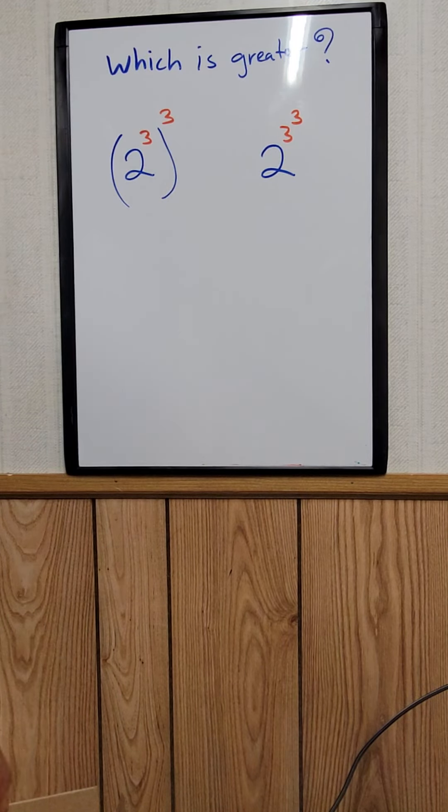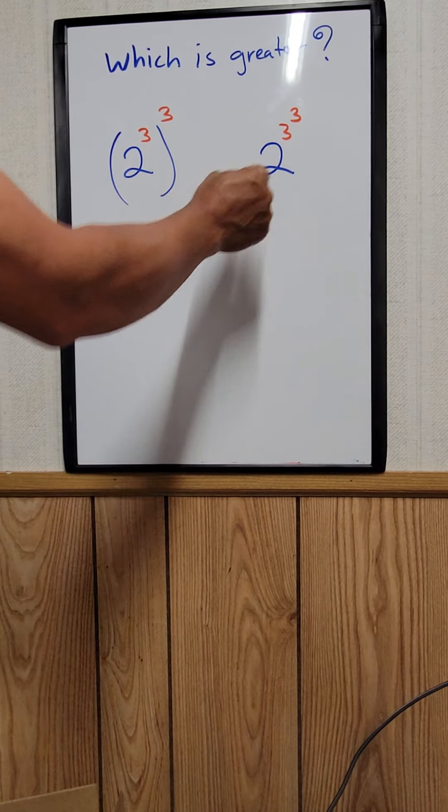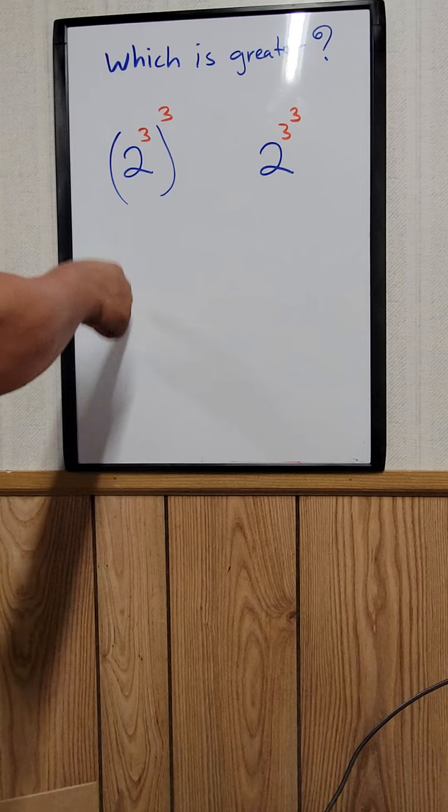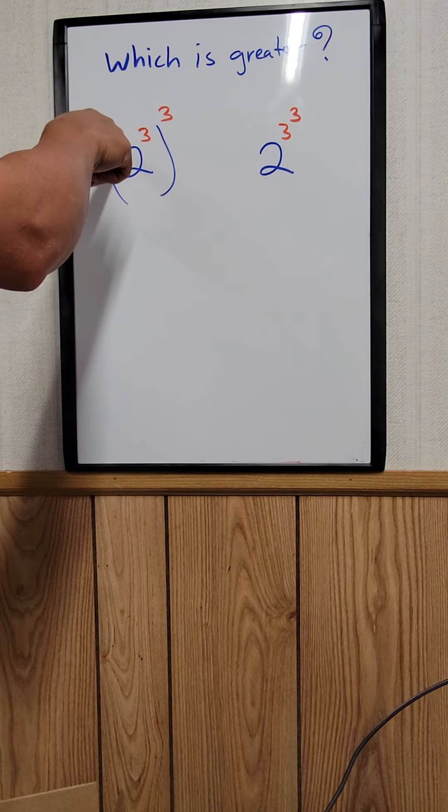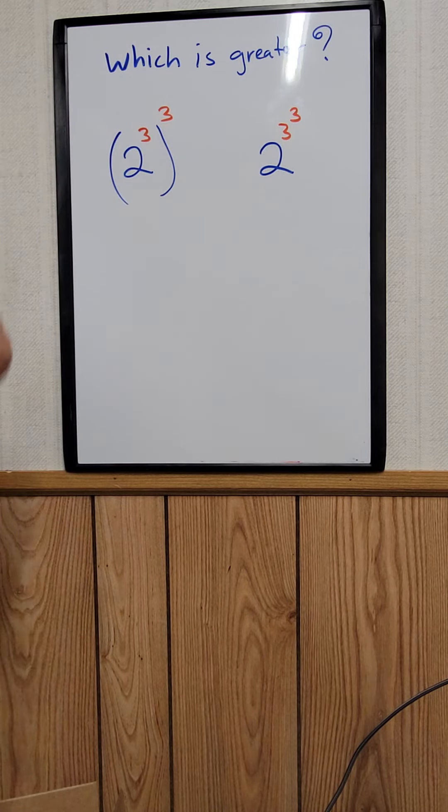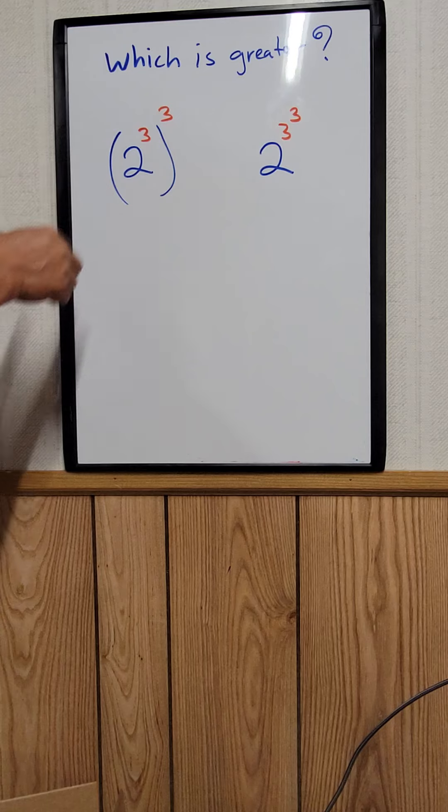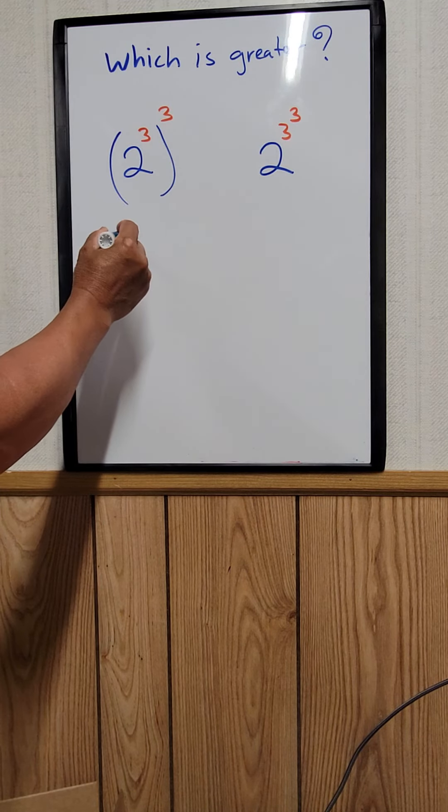So which one is greater, this one or this one? They look the same except that the first one has parentheses on 2 to the third power. For the first one right here, I just mean that you take 2 to the third times 2 to the third times 2 to the third.